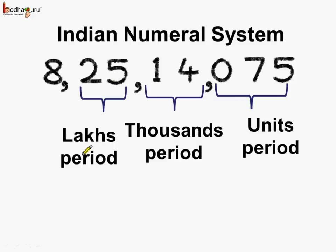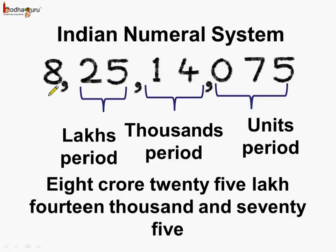The third period is the lakhs period. And if you see, we just have two places here for the lakhs period, so here is the third comma, which marks the beginning of crores. So this number can be read as eight crores, twenty-five lakhs, fourteen thousand and seventy-five.